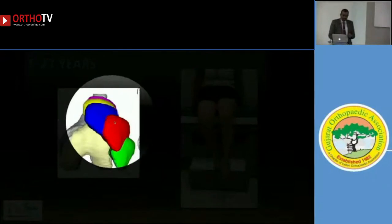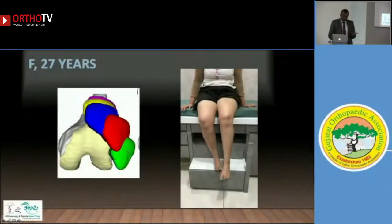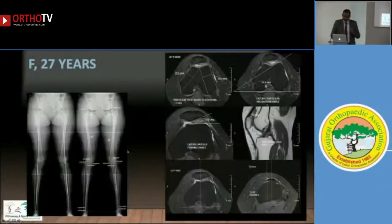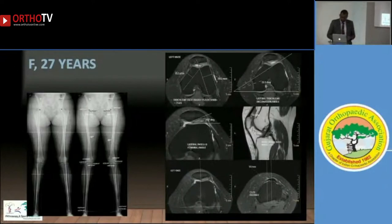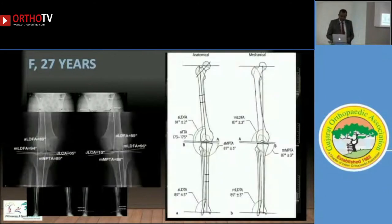I measured all her patella-trochlea indices, and to my surprise everything was abnormal — all angles were abnormal. Her alignment X-rays showed all alignment indices were also abnormal. I was confused about what to correct; she had a big cartilage lesion on the patella as well.